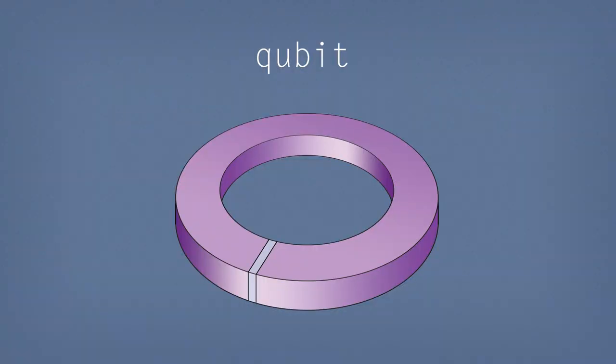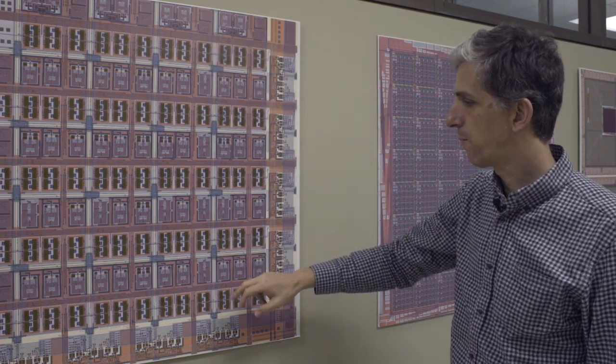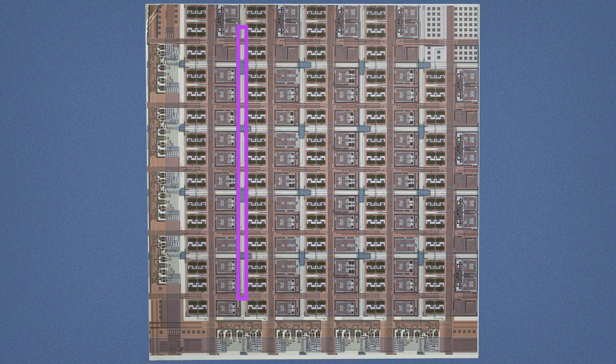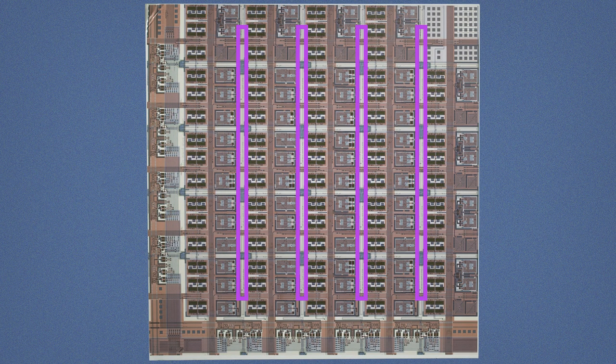So our qubits are actually superconducting wire loops that are interrupted with a circuit element called a Josephson junction and we make our qubits long and thin. You can see that there are four of them running vertically here and another four running horizontally here.